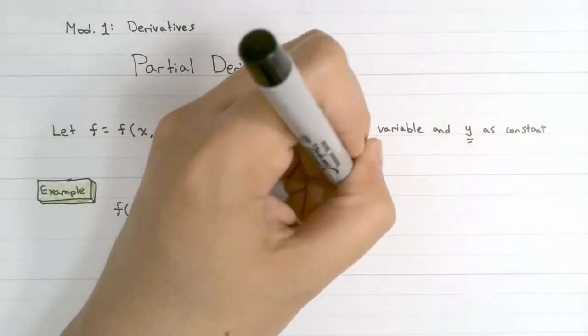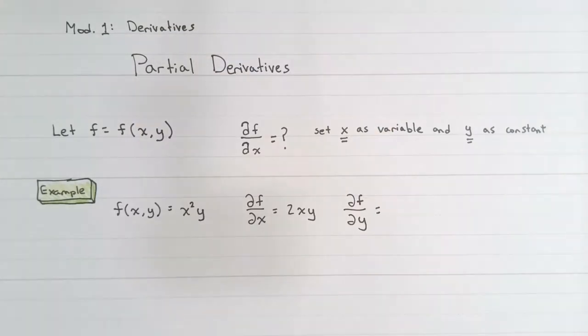Now what if we want to find the partial derivative of f with respect to y? In this case, dow f over dow y becomes the derivative of our constant x squared times y. And of course, our constant is just x squared, so dow f over dow y is just x squared.